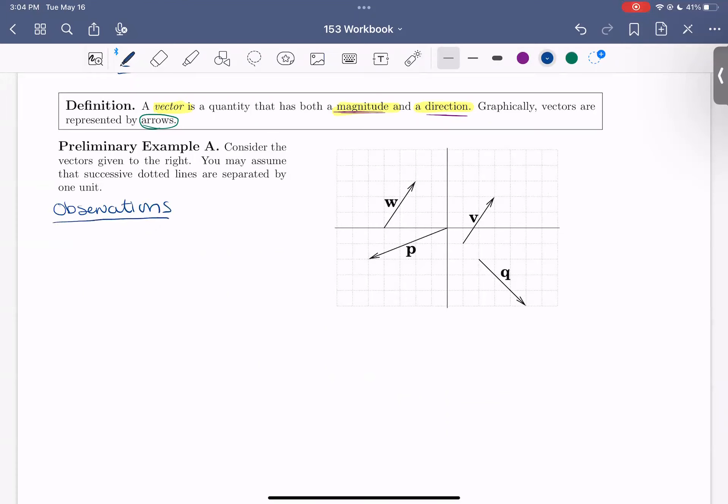So our first observation I want us to make is about how we would write out in notation or describe these vectors. So typically we label a vector. So looking at this vector P, we label it with its letter P and then do a little arrow on top to signify that P is a vector.